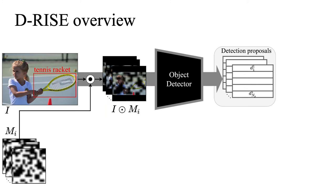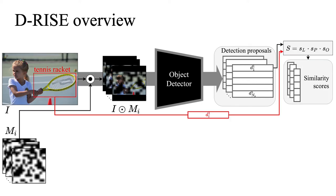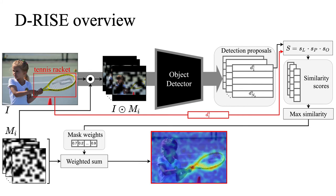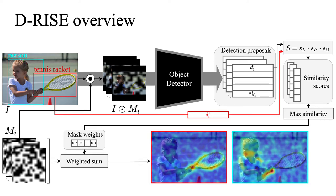We address this question by measuring how different perturbations of the input affect the output of the model. We feed the masked images through the object detector, and for each of them it returns a set of detection proposal vectors. To compare the detection we would like to explain and every detection proposal vector produced by the model, we propose a similarity metric. We use this metric to compute similarity scores for each mask, and once we have them, we compute the saliency map as a weighted sum of masks. Only when the mask preserves some important area, the object would still get detected and the mask will get a high score.